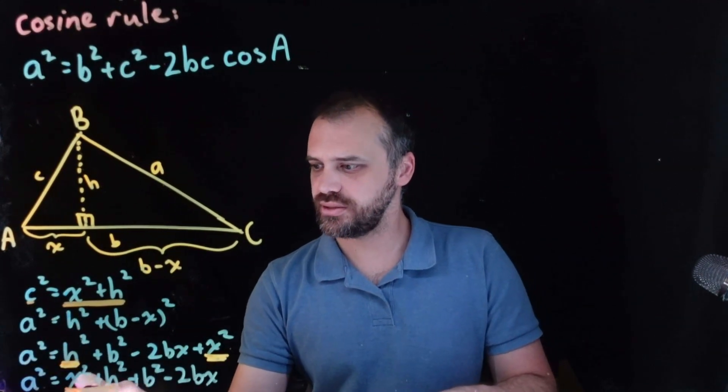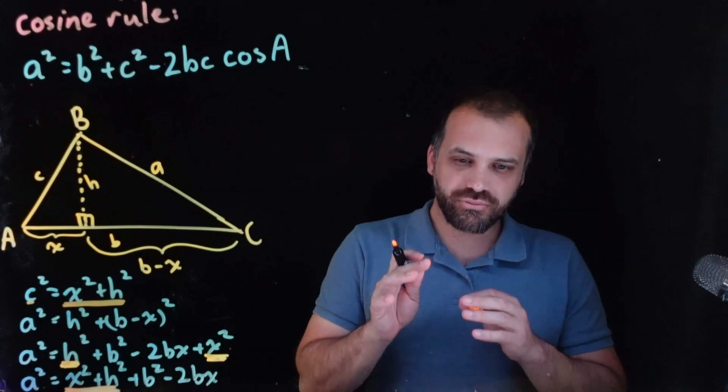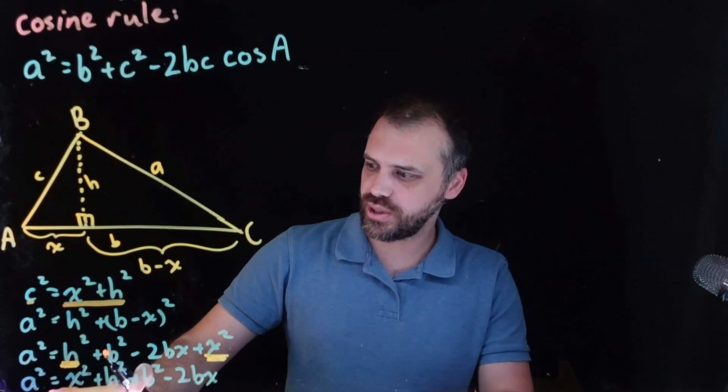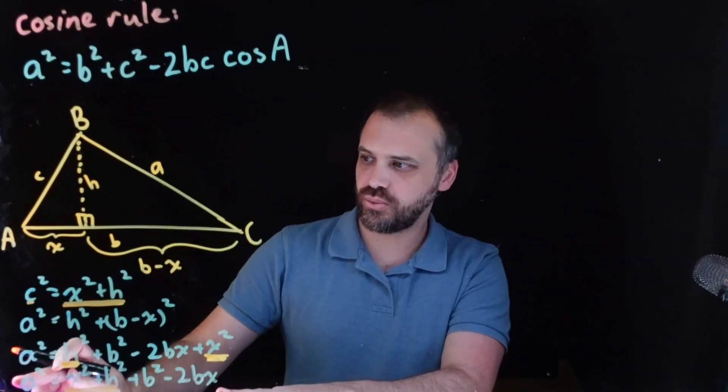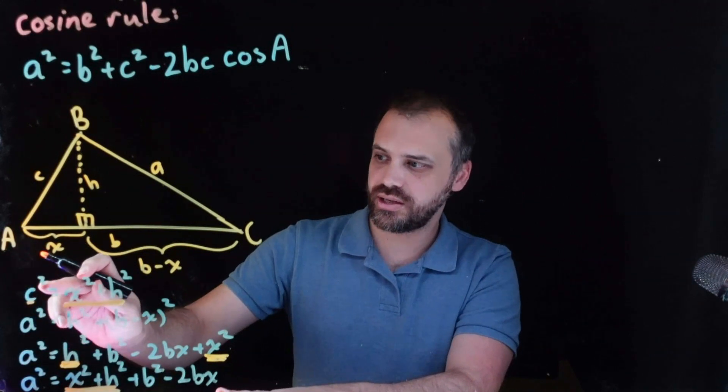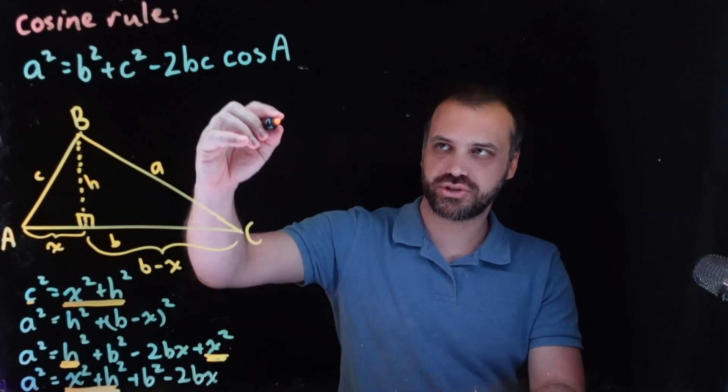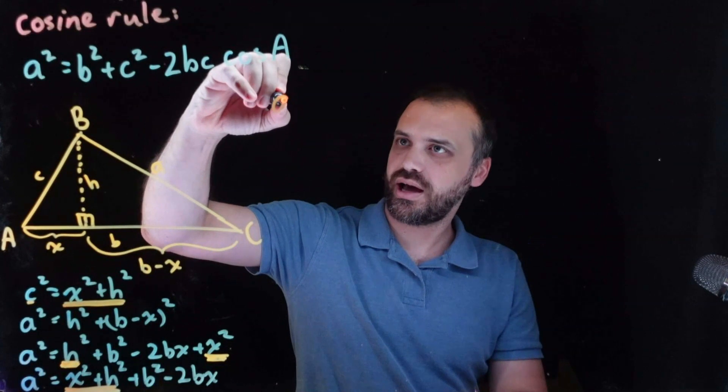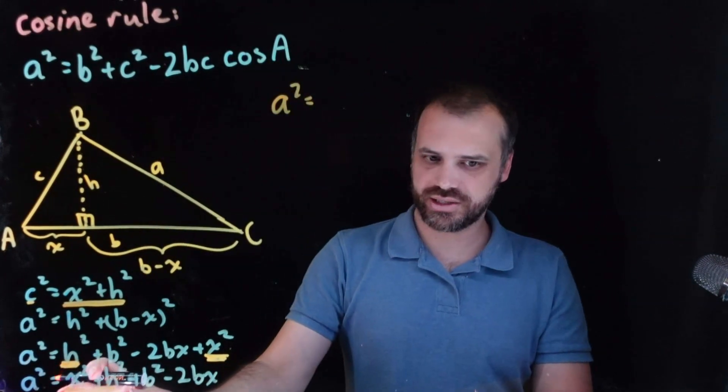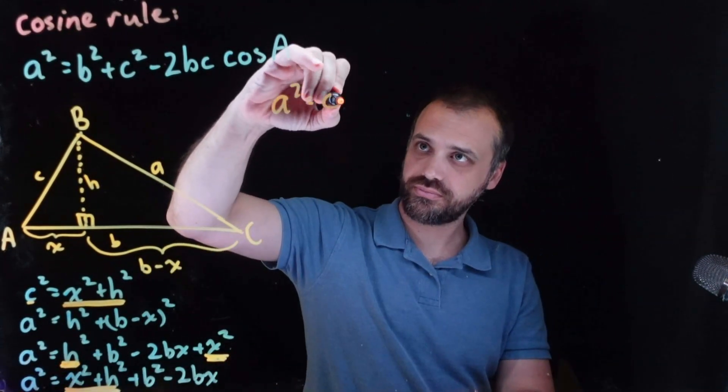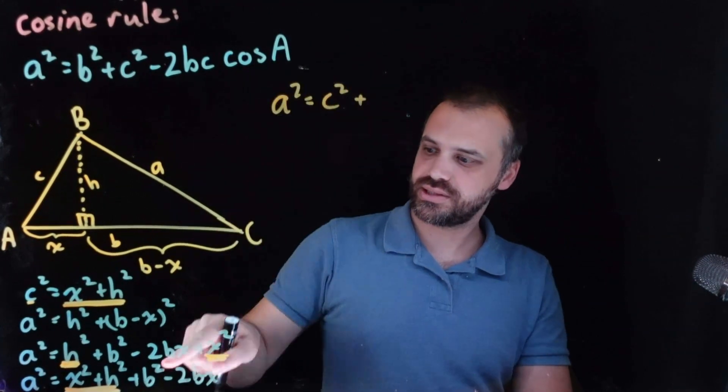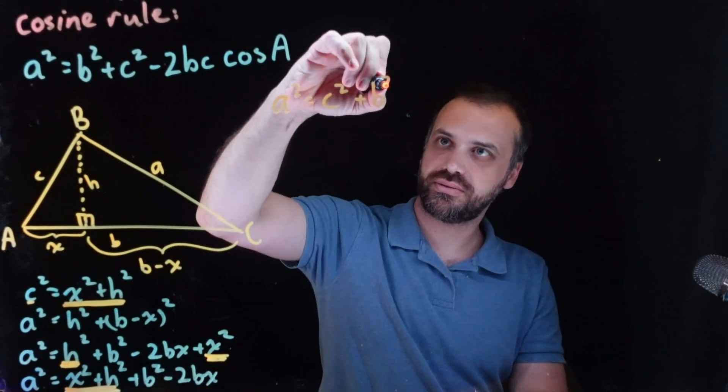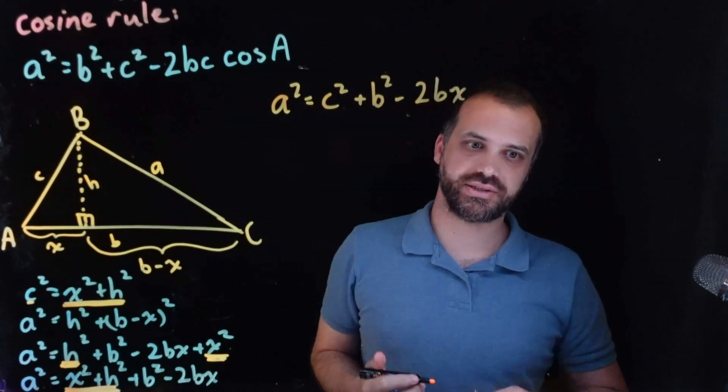X squared plus H squared equals C squared. We can replace X squared plus H squared in this equation with the C squared in this equation. So we can now say that A squared equals, not X squared plus H squared, but C squared plus this B squared thing minus 2BX.